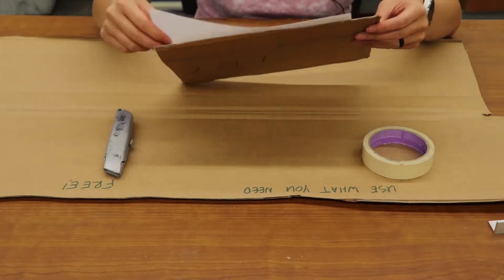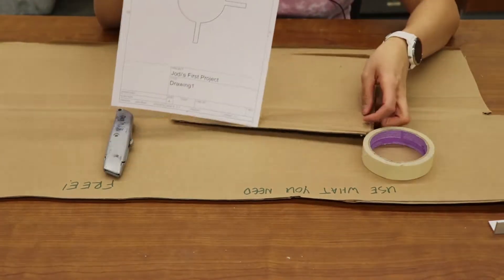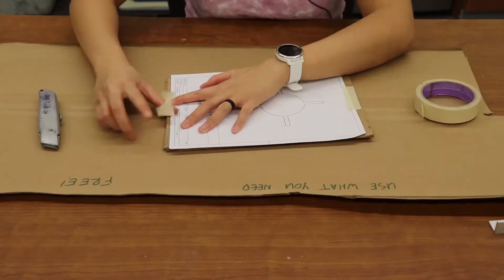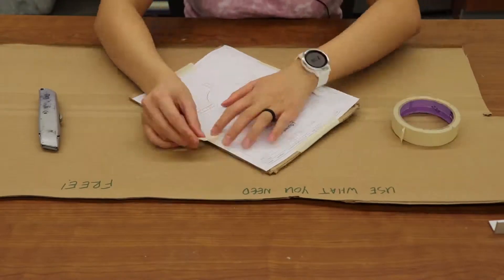Let's first start by taping your drawing onto the piece of cardboard that you're going to cut out for your fin alignment jig. Once you've got your drawing taped down, we can follow the lines on your drawing.